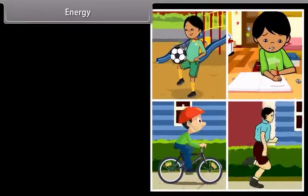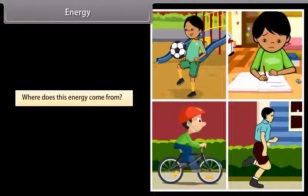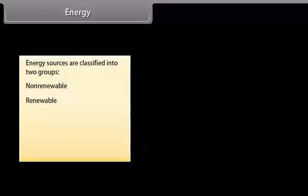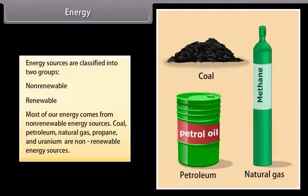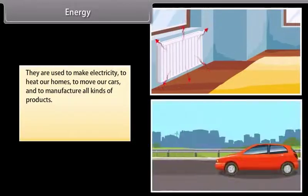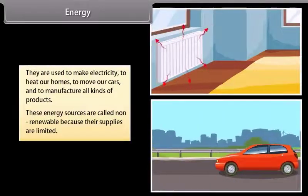To do any kind of work, we need energy. The sun is the biggest natural source of energy. Many of our energy sources are derived from the sun. Energy sources are classified into two groups: non-renewable and renewable. Coal, petroleum, natural gas, propane, and uranium are non-renewable energy sources, used to make electricity, heat our homes, move our cars, and manufacture products. These are called non-renewable because their supplies are limited.